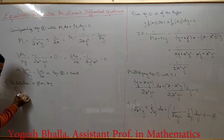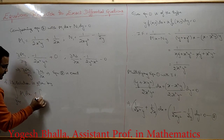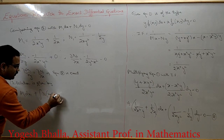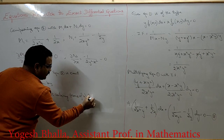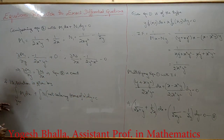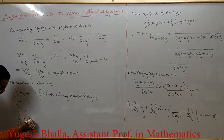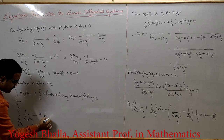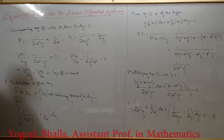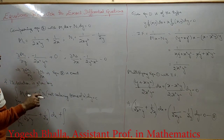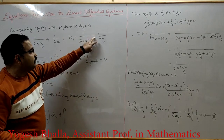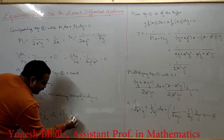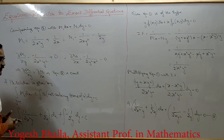The solution of an exact equation is given by: ∫M1 dx (keeping y constant) + ∫(terms of N1 not containing x) dy = c. M1 = 1/(2x²y) + 1/(2x). The term in N1 not containing x is −1/(2y), so we integrate that separately.